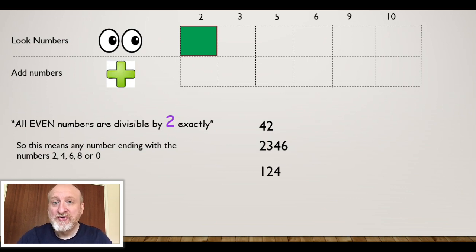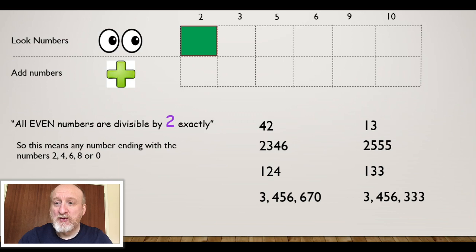Same as 124, ends in 4, so therefore it's divisible by 2. And I'll put this in for a laugh: 3,456,670. Well it ends in a 0, so therefore it's an even number and therefore it's divisible by 2.